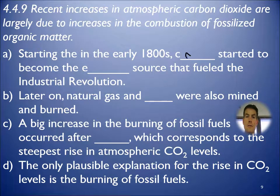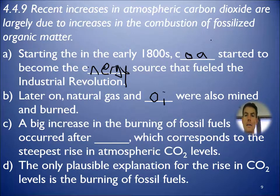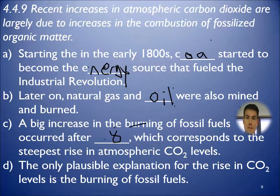And starting in the early 1800s, coal started to be using as the main energy source that fueled that industrial revolution. And later on, we added natural gas and oil. Coal was easier to handle in the mines. That's why it was first. Gas, they just left off and nobody knew what to do with oil for a while. Until around 1900, then oil started to be used more. And the big increase really occurred after 1850.